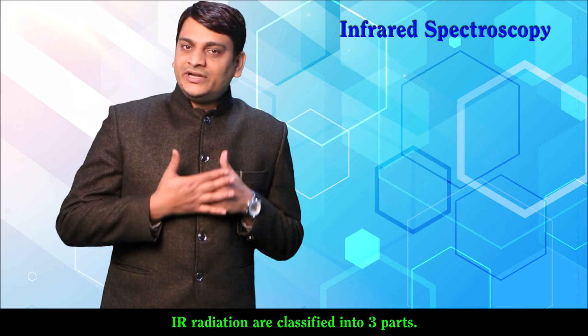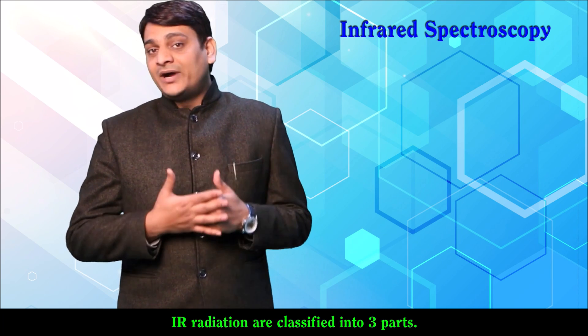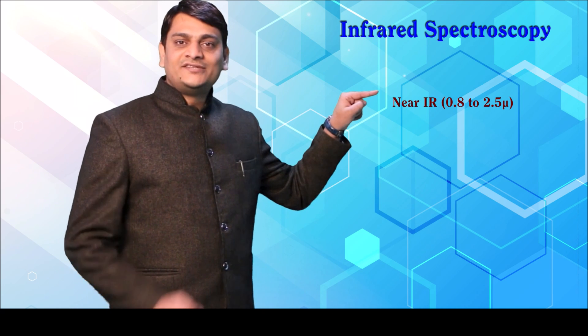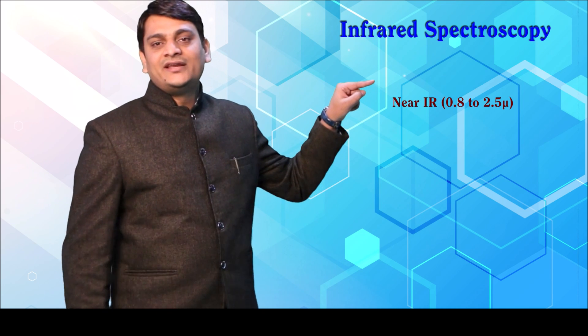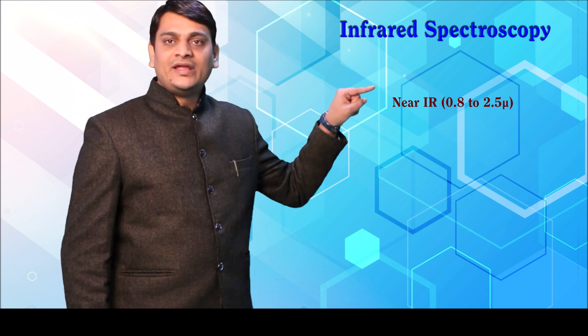Now coming to the infrared radiations used in IR spectroscopy. It is classified into three parts. The first one is near IR, and the range for near IR is 0.8 to 2.5 micron.